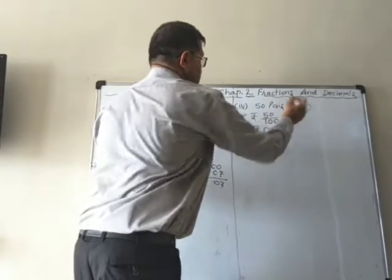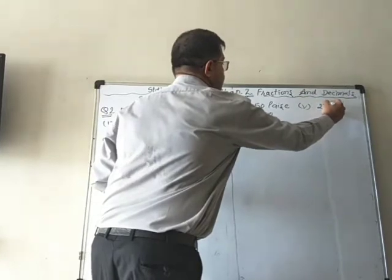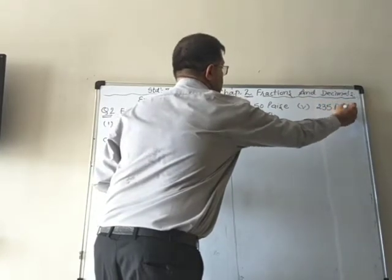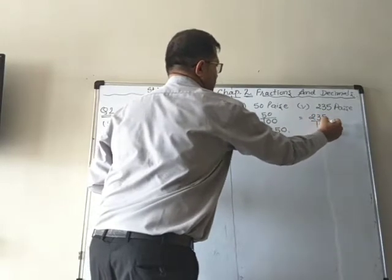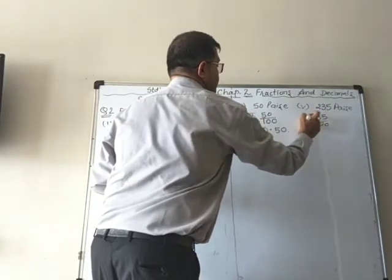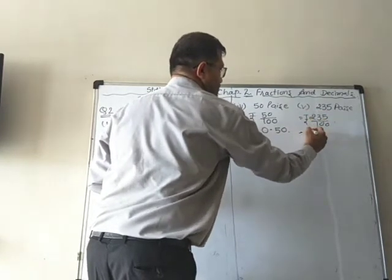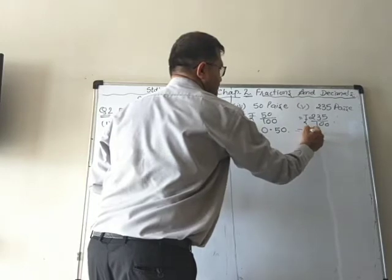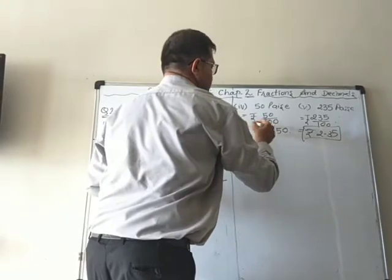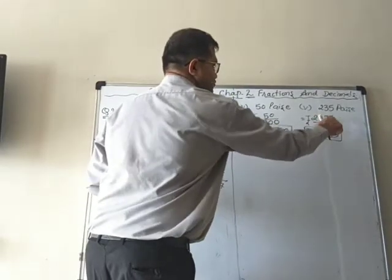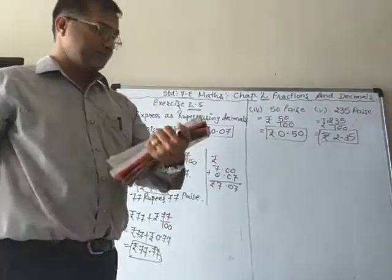The fifth one is 235 paise. We do the same thing: 235 upon 100 rupees. Two decimal places means we put the point to get rupees 2.35. We need 2 decimal places, so the answer is rupees 2.35.